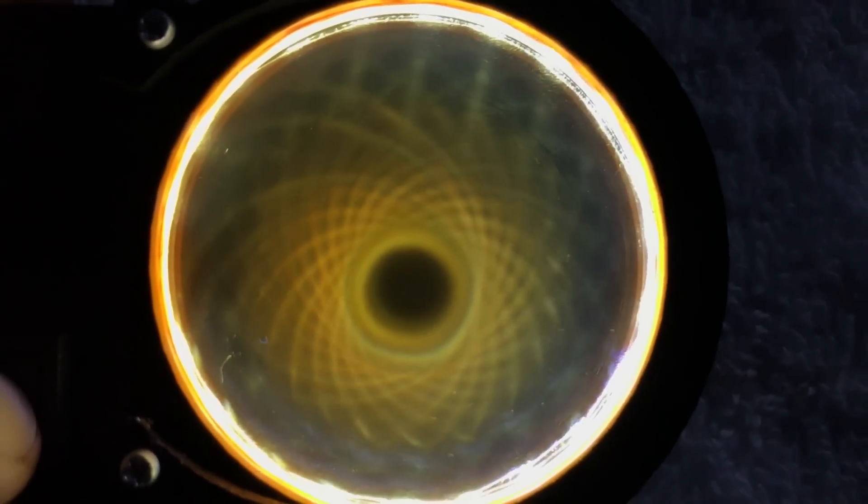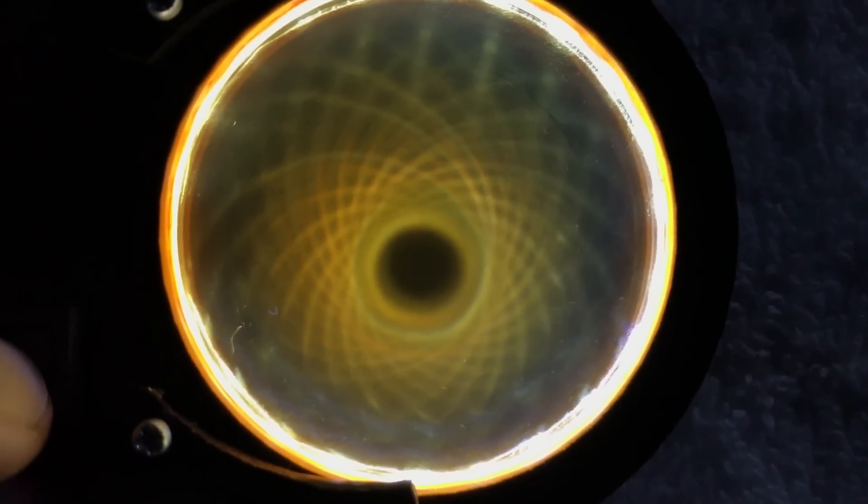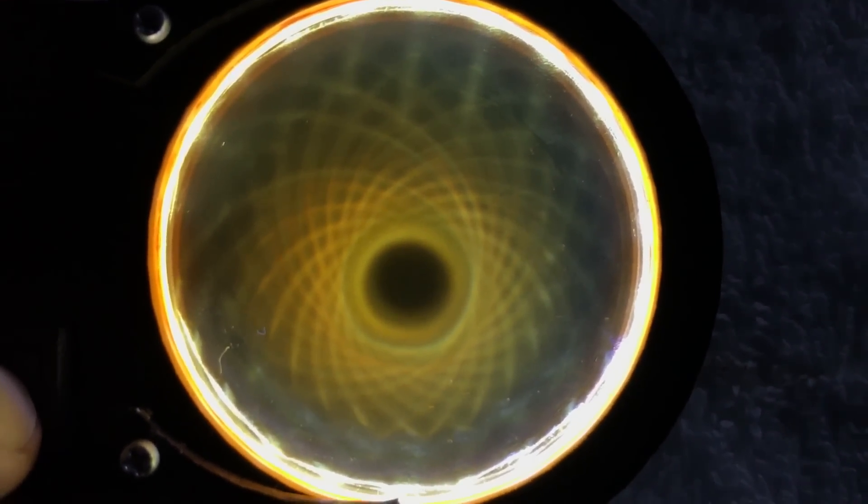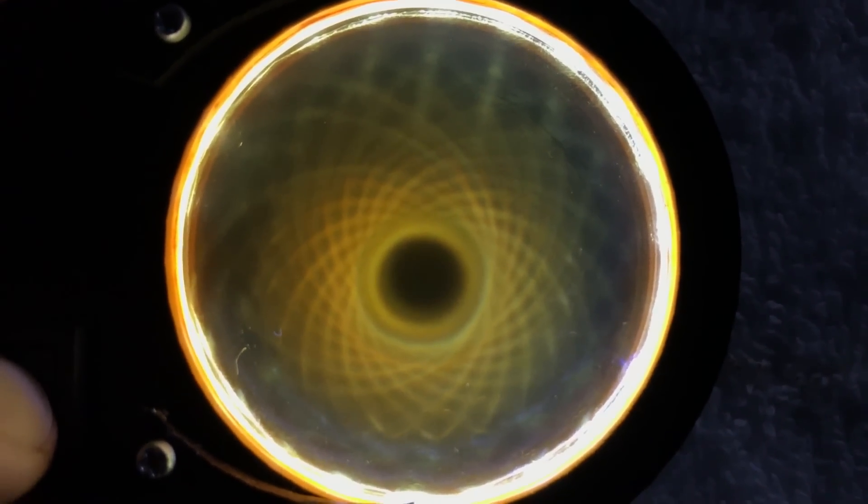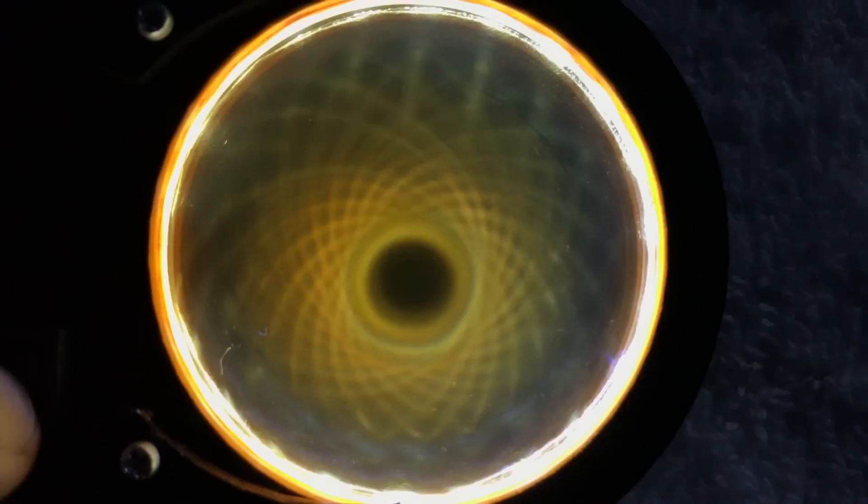So the bright outer ring is the centrifugal high Gaussian flux. And the intermediate yellowish looking ring is the intermediate zone, where it's transitioning.